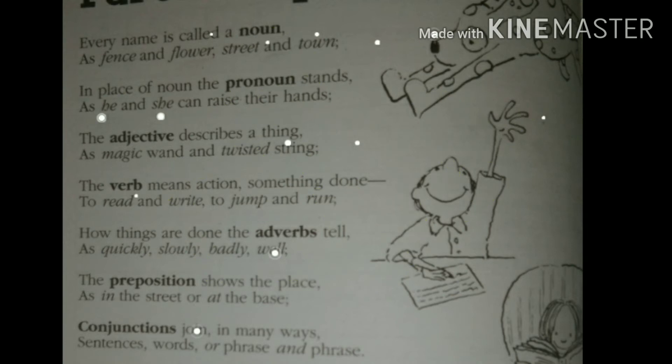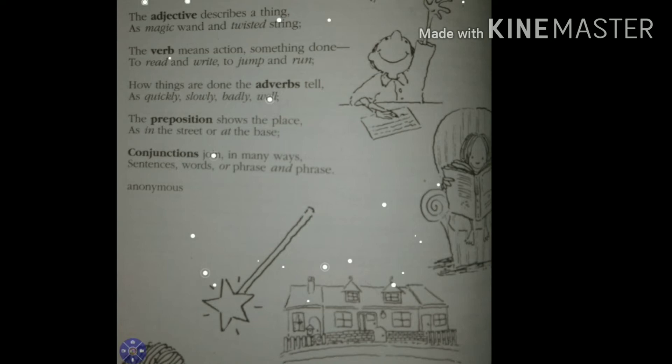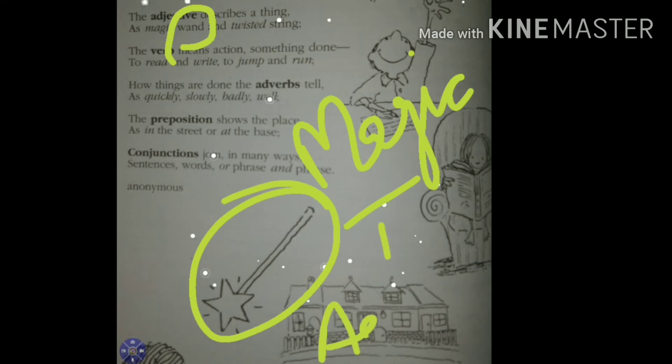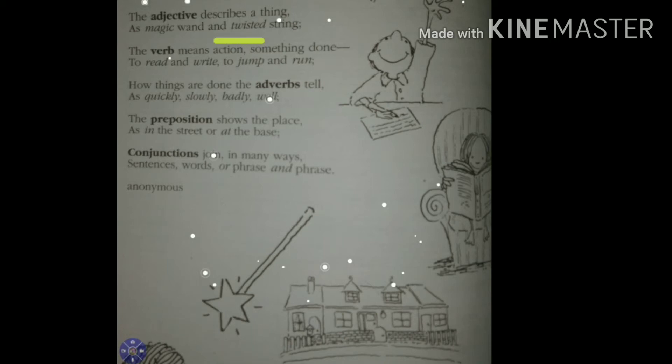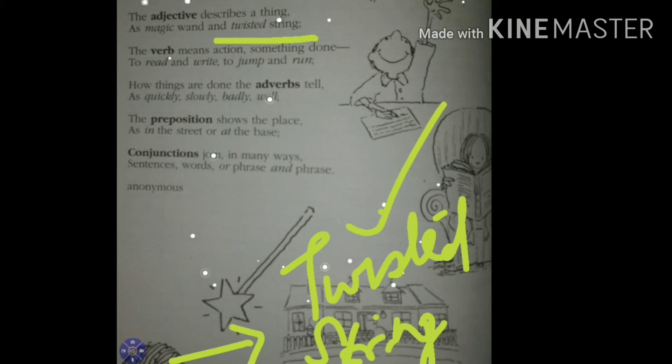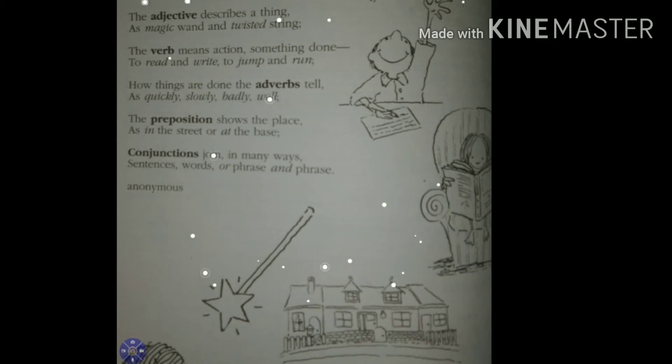For example, we have here magic wand and twisted string. This is a magic wand. So the word magic here works as an adjective. Thereafter, the second example given here is twisted string. The word twisted here describes the quality of the string. So the word twisted here is an adjective. I think it's clear to you all.